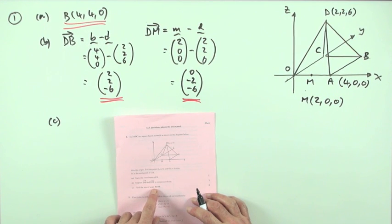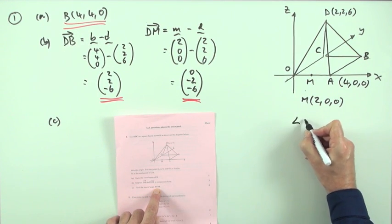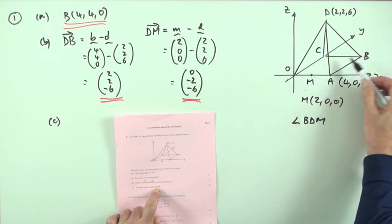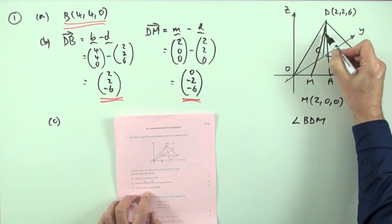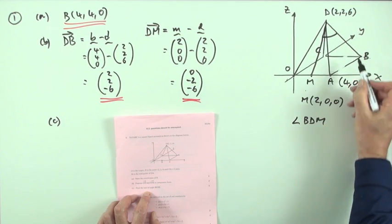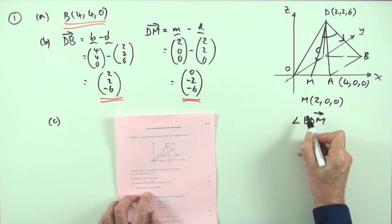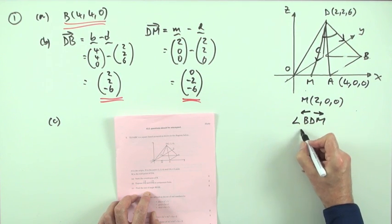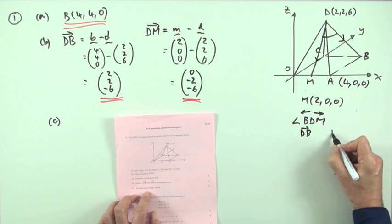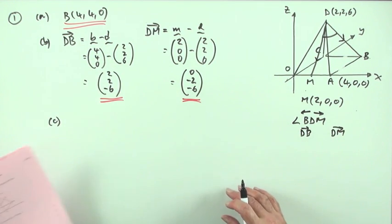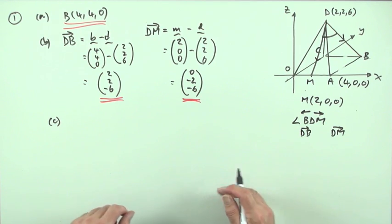So for part C, what's the size of angle BDM? Now, if you're looking for angle BDM, from B to D to M, the angle in between the two of those, you need the vectors that radiate away from the common point, D to M and D to B. You need the vector DB and you need the vector DM, which is just what you found in the first part.